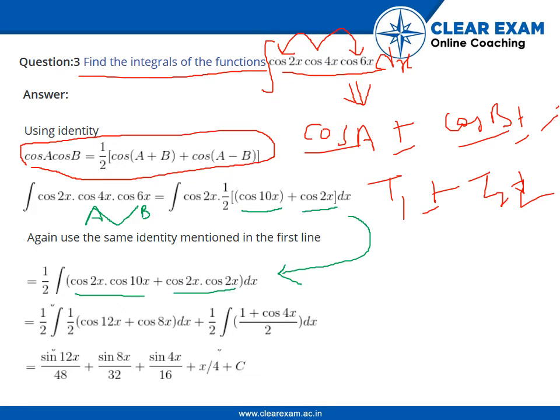Now what we do, we again apply the same identity on the first term. Our A is this time 2x and our B is 10x. So cos(A + B) will be 12x, and cos of 2x minus 10x will be cos of minus 8x. But I already told you that cos of minus x is equal to cos x, so cos of minus 8x will be written as cos 8x. And this thing is cos squared 2x.